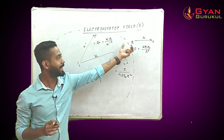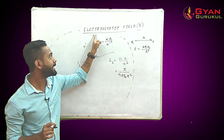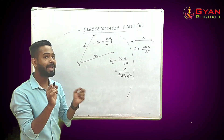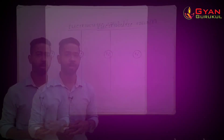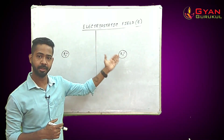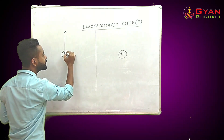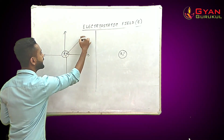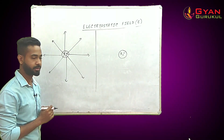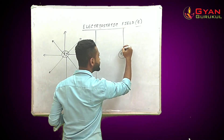Writing the expression gives only the magnitude; we also need to understand the direction. For a positive charge, the electric field direction is always radially outward from the charge, and the strength decreases as we go farther away. For a negative charge, it is exactly the opposite — the electric field direction is radially inward, directed towards the charge from all directions.